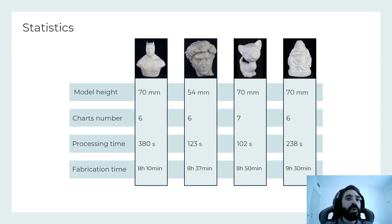Due to limited size of our machine, we fabricated results of maximum 70mm in height. The small size influences fabrication quality, since the cutter cannot be thinner than 1mm. However, we obtained great results. The overall processing time always took a few minutes, while the entire fabrication took between 8 and 9 hours for each model.